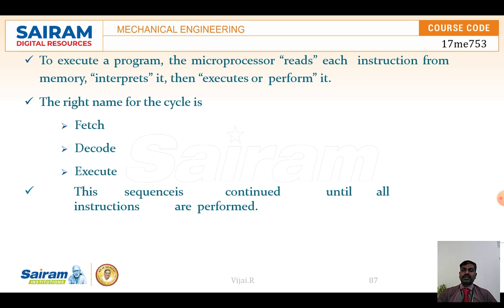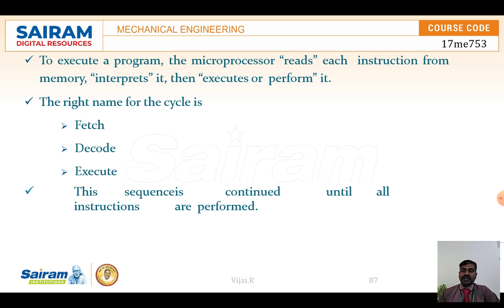The three important steps a microprocessor performs are fetch, decode, and execute. To execute a program, it first fetches instructions from memory. It then decodes the information — converting it into machine language. Finally, it executes the program. Whatever information is stored in memory is decoded into binary, then into the processor's own language, and executed. The ALU, memory, and system bus are all very important in this structure.